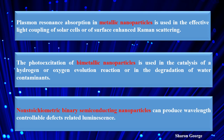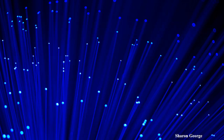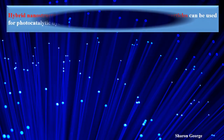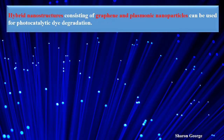Another nanophotonics material is hybrid nanostructures. These nanostructures consist of graphene, plasmonic nanoparticles, metal oxide nanoparticles, and metal oxide nanoplates, which can be used as a chemical sensor. This is also one application of nanoparticles that can be used for photocatalysis or dye degradation.